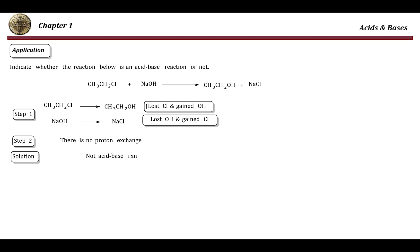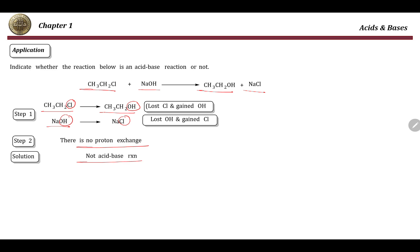Let's take another example. You are given this equation and asked whether this is an acid-base reaction or not. Following the same strategy, I will compare the structure before and after the reaction. I can see that the only thing which happened is exchanging Cl with OH, and the same thing happens in reverse — we exchanged OH with Cl. Since there is no proton exchange process, this reaction cannot be considered an acid-base reaction.